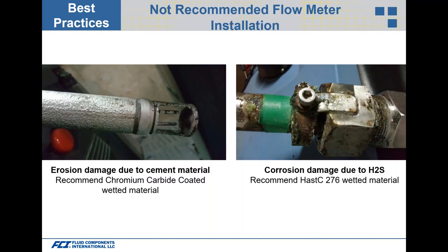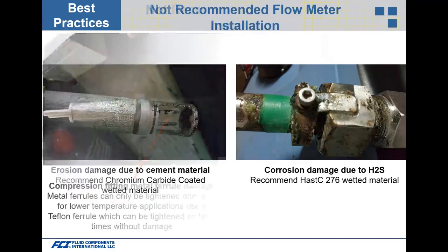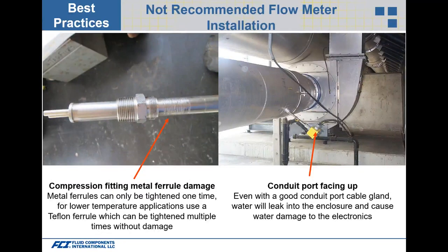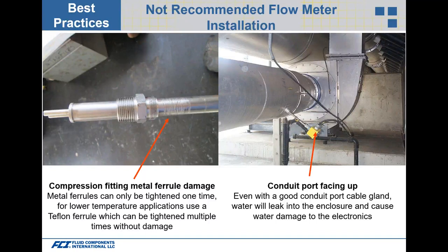Erosion damage from cement or abrasive material can degrade the probe — some manufacturers offer a chromium carbide coating for protection against erosion. Corrosion damage from H2S (hydrogen sulfide) requires Hastelloy C wetted material — it's critical to understand the process gas composition and select compatible flow element materials. For process connections using compression fittings: Teflon ferrules can be removed and reinstalled repeatedly at lower temperatures, but metal ferrules should only be crimped once to avoid probe damage.